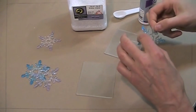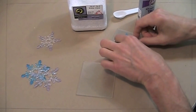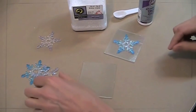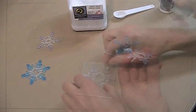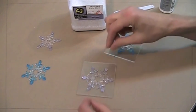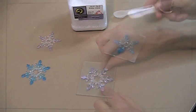The white glue will burn off during the firing process. Once the snowflakes are in place, the panels are sprinkled with medium clear frit.